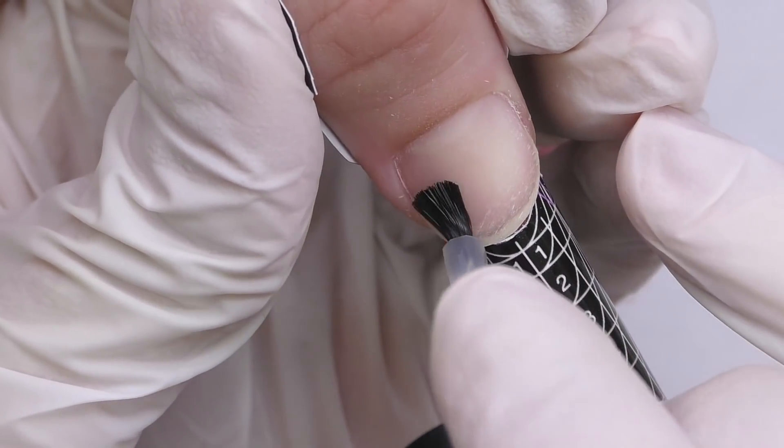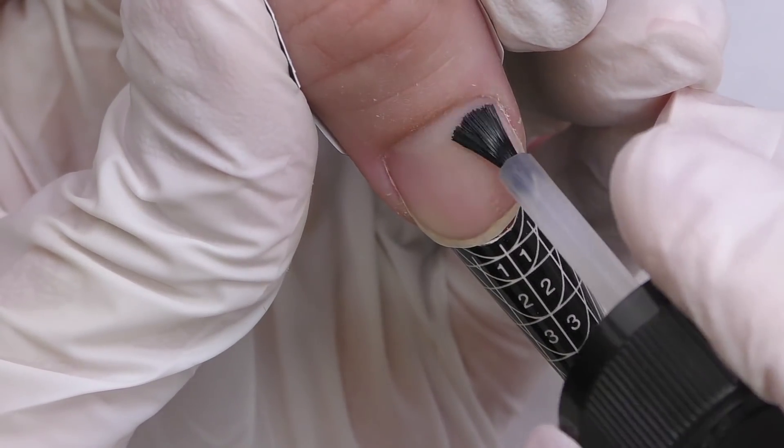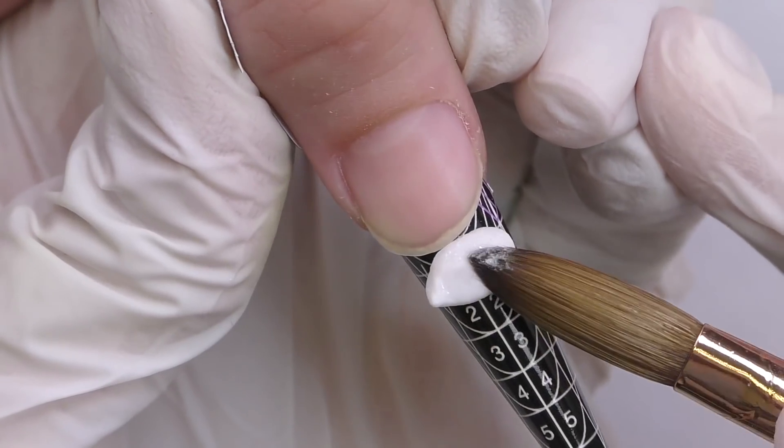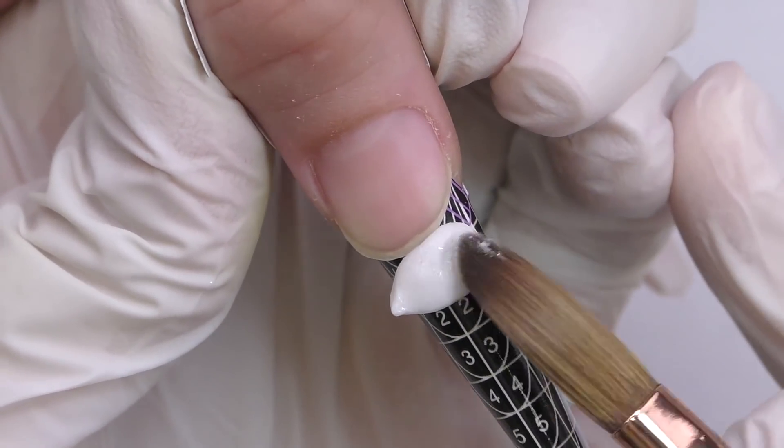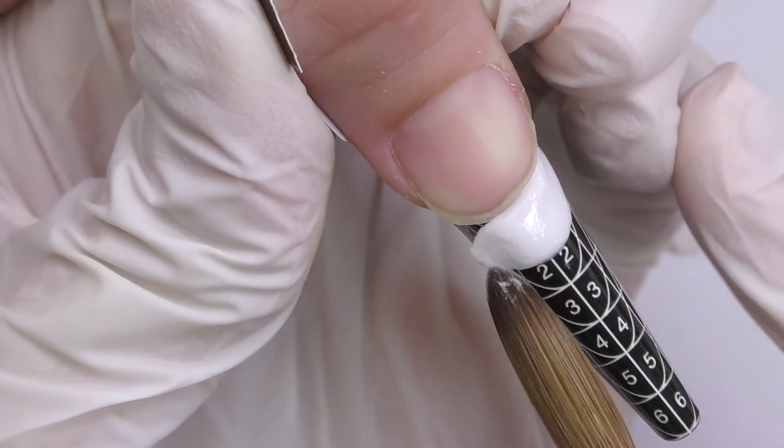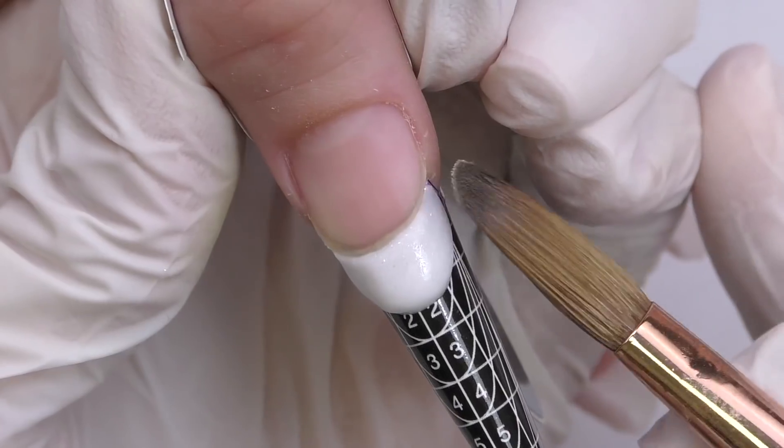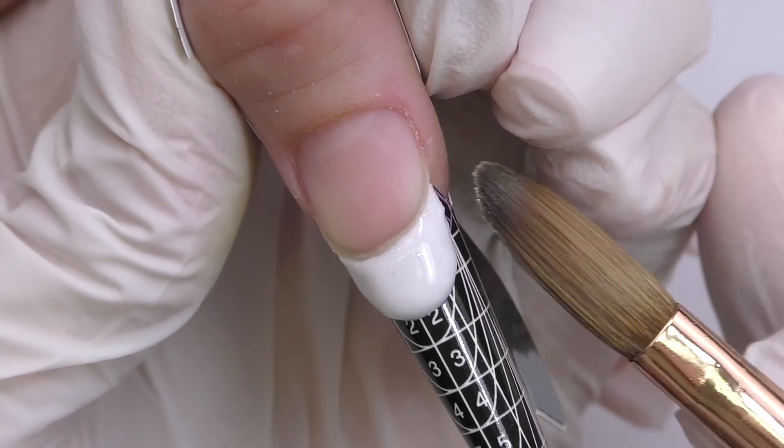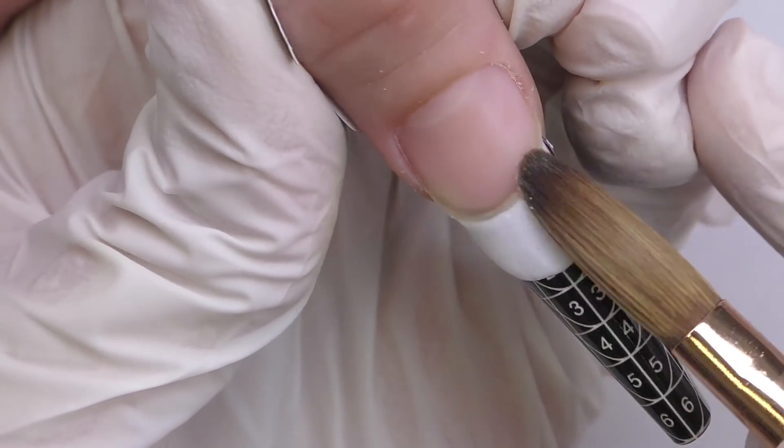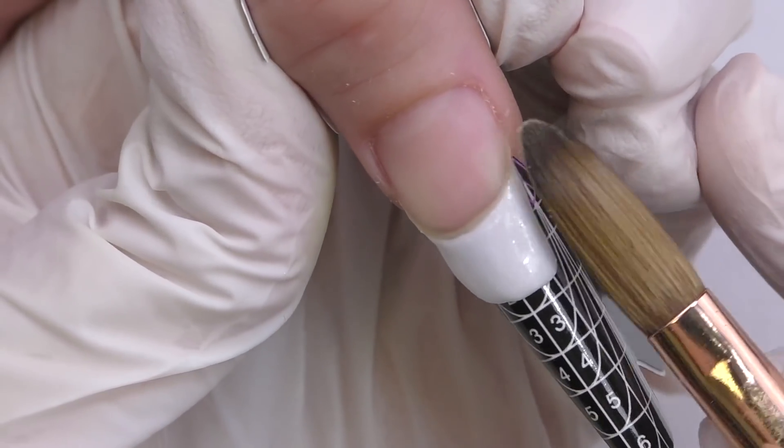So I fit the form, apply dehydrator and I decided to use acid primer. I recommend using it when you have nails like that, closer to oily skin to hyperhidrosis. And it's very important that you need to wait until the primer fully dries. Unlike with non-acid primer, then you do not need to wait.